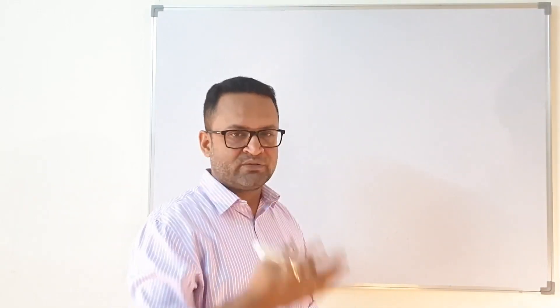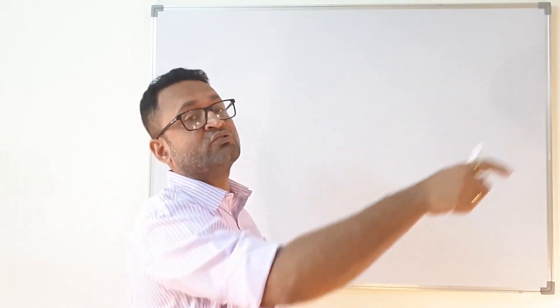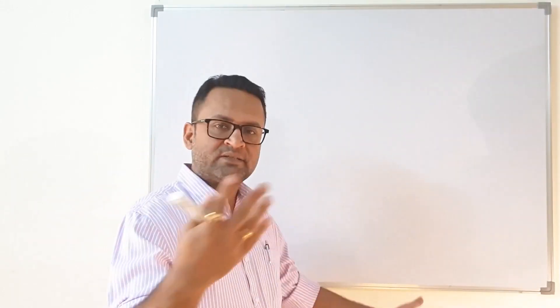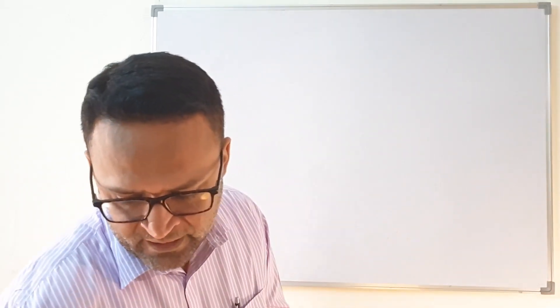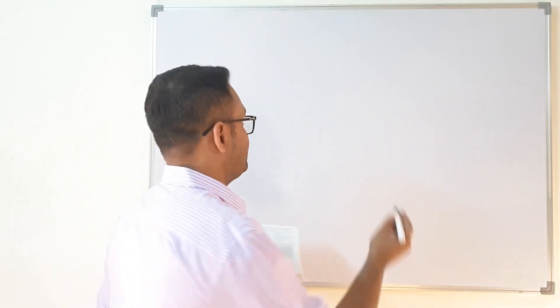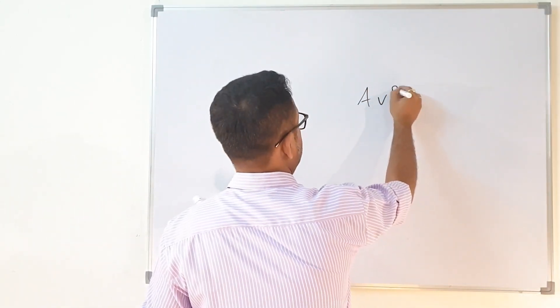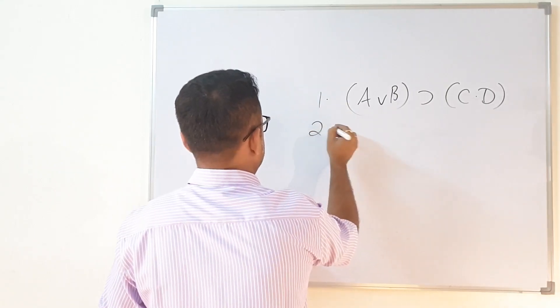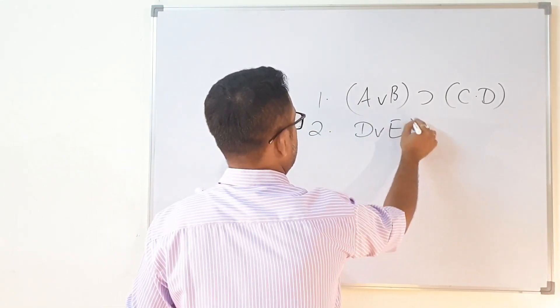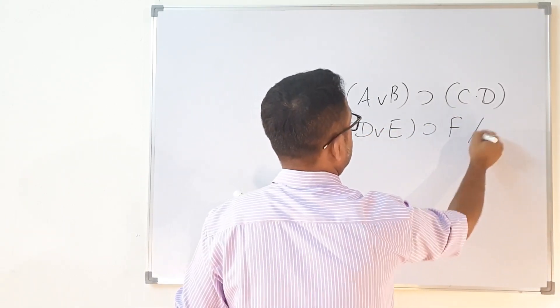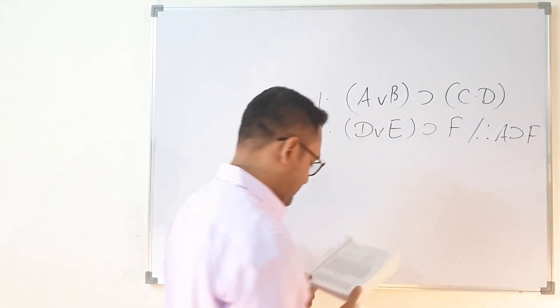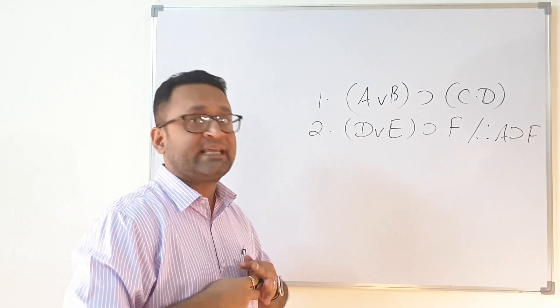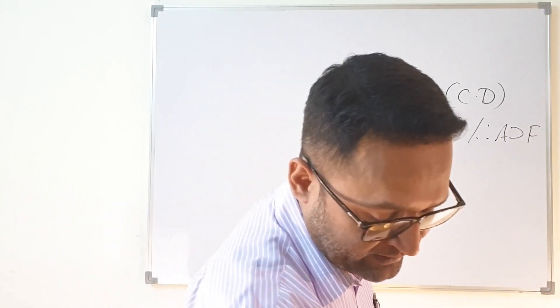If the argument turns out to be valid, you then use the natural deduction method — CP, IP, SCP, or whatever the question requires. Let us take an example from your book. Suppose the argument is: (a∨b) → (c·d), and (d∨e) → f, therefore a → f. We need to decide whether this argument is valid or invalid.